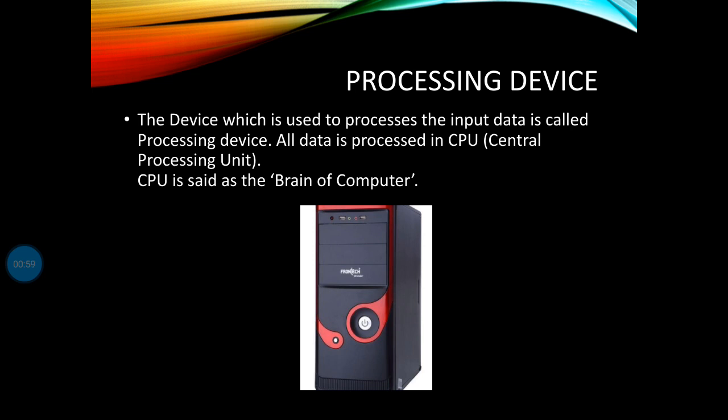The full form of CPU is Central Processing Unit, because all the processing work in the computer is done by the CPU. This is why we call the CPU the brain of the computer or the heart of the computer.